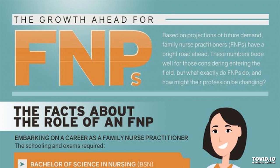Named types include annuloaortic ectasia, thoracic aortic aneurysm (TAA), thoracoabdominal aortic aneurysm, and abdominal aortic aneurysm (AAA). Aortic aneurysm can be true or false: true aneurysm involves all three layers of the aorta, whereas false aneurysm involves a rupture within the adventitia. Treatment and surgery depend on the size; greater than 5.5 centimeters is considered for surgery. Endovascular aneurysm repair is used in those who cannot undergo surgery and reduces mortality.